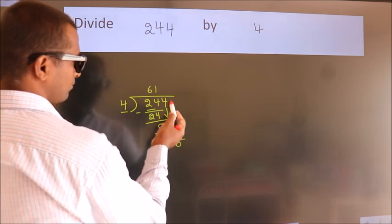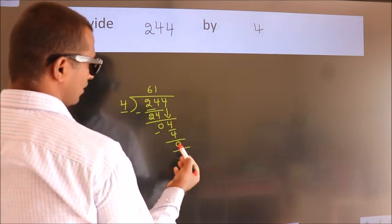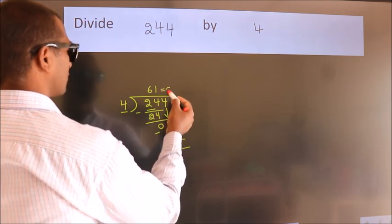After this, no more numbers to bring down. We got remainder 0. So this is our quotient.